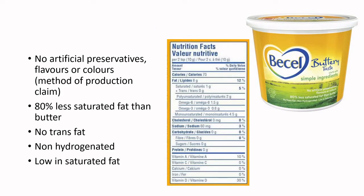We won't deal with the whole grains claim right now. Moving to the margarine example: 'no artificial preservatives, flavors, or colors' are method of production or quality claims dealt with later. '80% less saturated fat than butter' is a comparative claim — you'd need to get the Nutrition Facts data for butter from ESHA or a competitor's package and substantiate the claim between the saturated fat quantity in this product compared to butter.